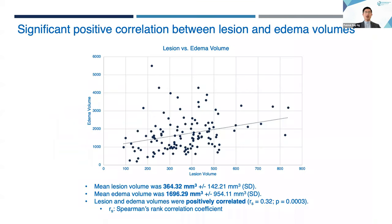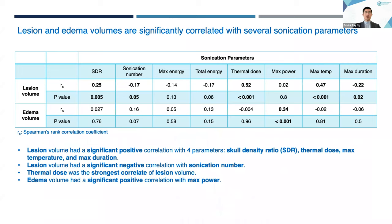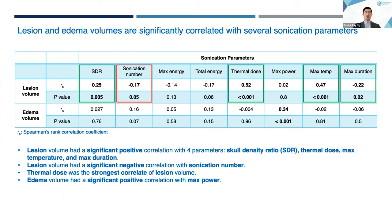Moving on to results. This graph shows lesion and edema volumes for all patients. The mean lesion volume was about 364 cubic millimeters, and the mean edema volume was about 1,696 cubic millimeters. We found a significant positive correlation between lesion and edema volumes. We then correlated lesion and edema volumes with eight sonication parameters. We found a significant positive correlation between lesion volume and skull density ratio, thermal dose, max temperature, and max duration, and a significant negative correlation between lesion volume and sonication number. Thermal dose was the strongest correlate of lesion volume.